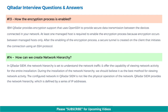Next, how is the encryption process enabled? IBM QRadar provides encryption support that uses OpenSSH to provide secure data transmission between devices connected in your network. At least one managed host is required to enable the encryption process, because encryption occurs between managed hosts only. After enabling the encryption process, a secure tunnel is created on the client that initiates the connection using an SSH protocol.